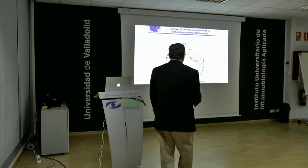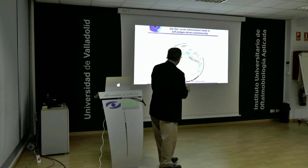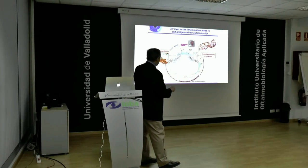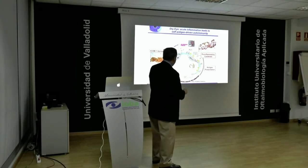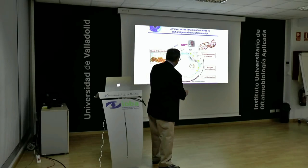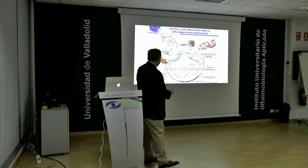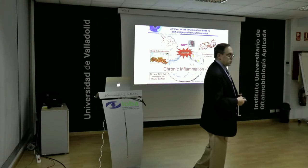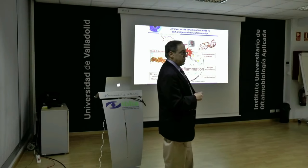Just to go through this quickly: we have a stimulus on the ocular surface, immature dendritic cells or antigen-presenting cells process the antigen, they leave via the lymphatics and travel to the draining lymph node — this is the afferent arm of the immune response. In the lymph node, cells are activated, then primed and targeted back to the ocular surface to create damage. We're looking at targets within this particular model to see what we can do about this pathology.